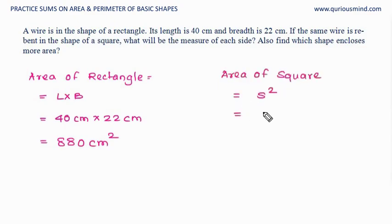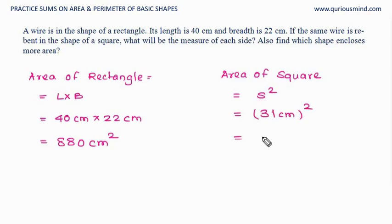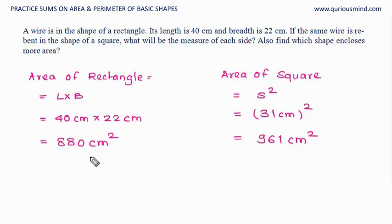The side of the square was 31 centimeters. 31 squared is 961 centimeter square, which is the area of the square. We can easily see that the area of the square is greater.